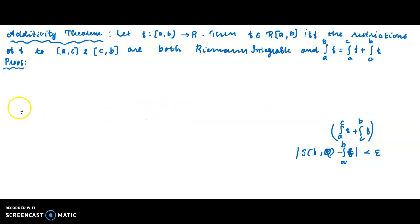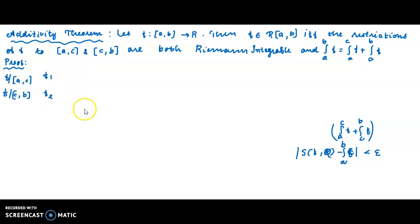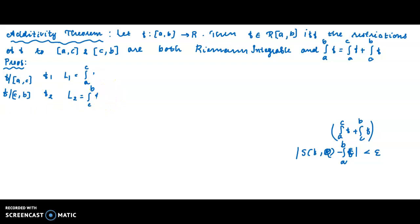We start here. F restricted to [a, c] gives F1, and F restricted to [c, b] gives F2. So we have two restrictions: F1 on [a, c] and F2 on [c, b]. Then S(f, P) minus L, where L1 equals the integral from a to c of F1, and L2 equals the integral from c to b of F2.